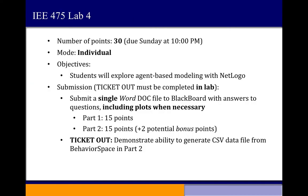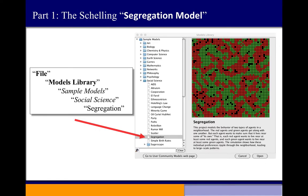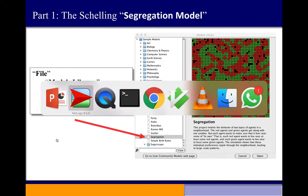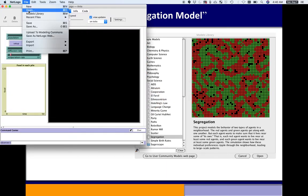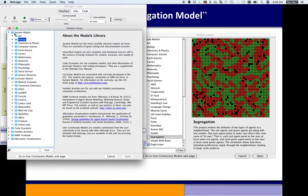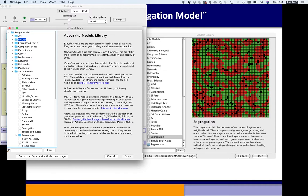So what are we going to do in the lab? This is an individual lab — do this on your own. If you attended an in-class lab session, there's a ticket out. If not, we may ask some questions after this lecture that you'll answer online. There are two parts: I want you to look at two different models from the models library. For the first part, open up the Segregation model, which is in the models library under Social Science.